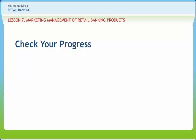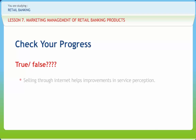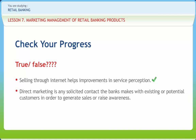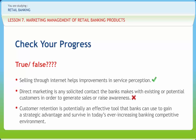Let us check if we have understood the concepts discussed in this lesson. Selling through the internet helps improvement in service perception — Right. Direct marketing is any solicited contact the bank makes with existing or potential customers in order to generate sales or raise awareness — Wrong, it is unsolicited. Customer retention is potentially an effective tool that banks can use to gain a strategic advantage and survive in today's ever-increasing banking competitive environment — Right.